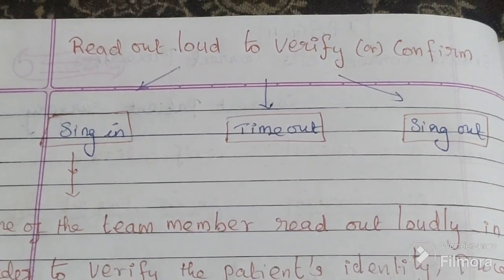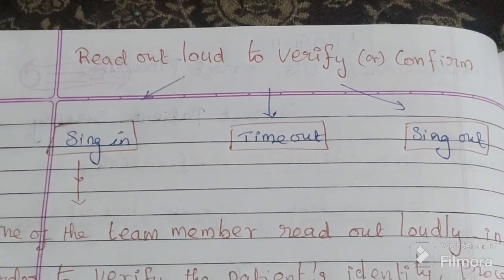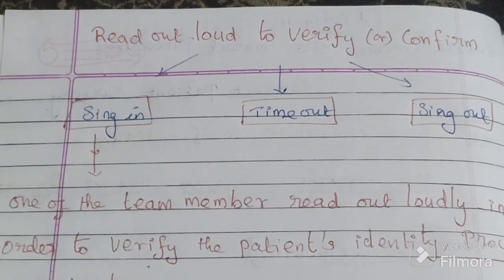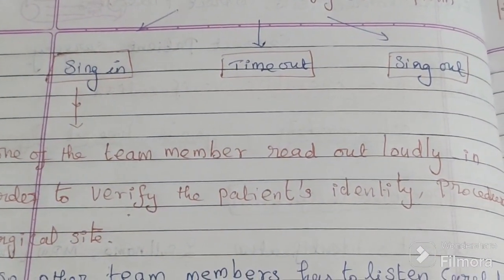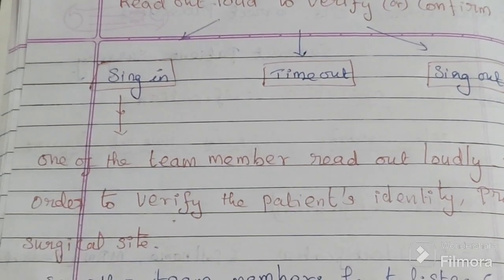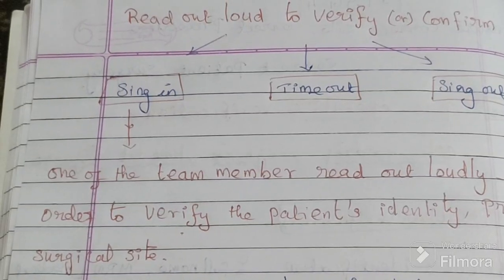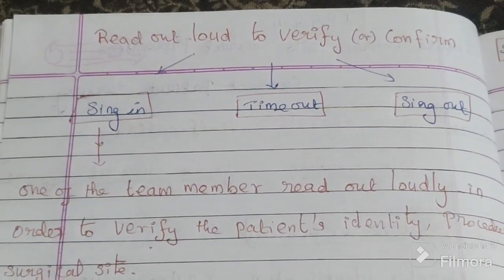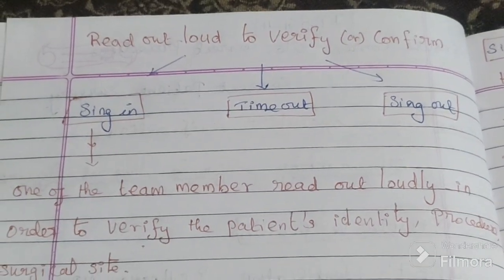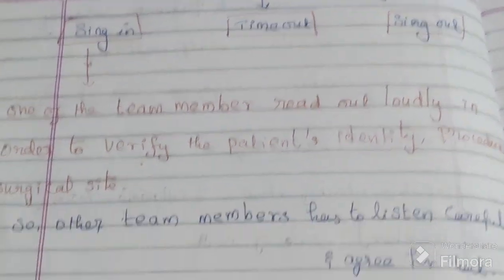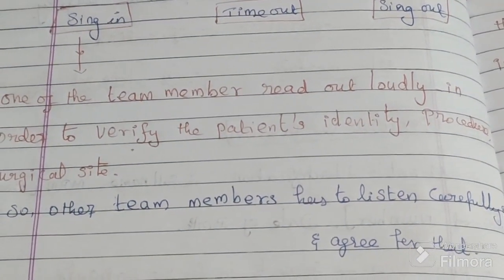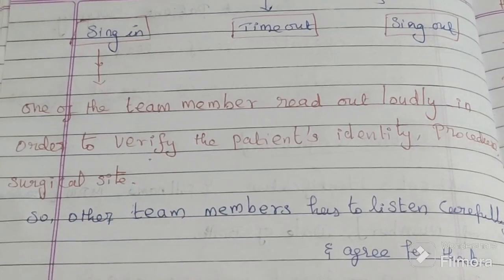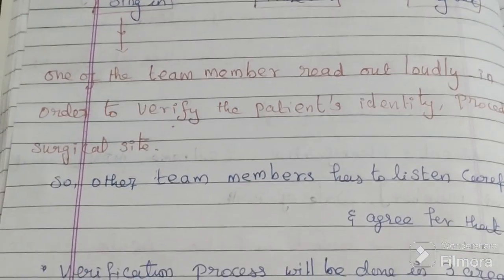Sign in, time out, and sign out are three important terms. It is a process where one team member reads out loudly to verify the patient identity, procedure, and surgical site. Other team members listen carefully and agree. If there is any discrepancy, the procedure will be held until it is resolved.